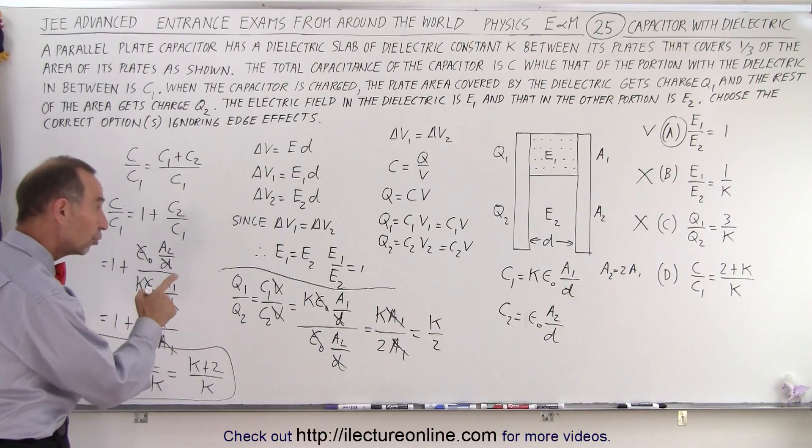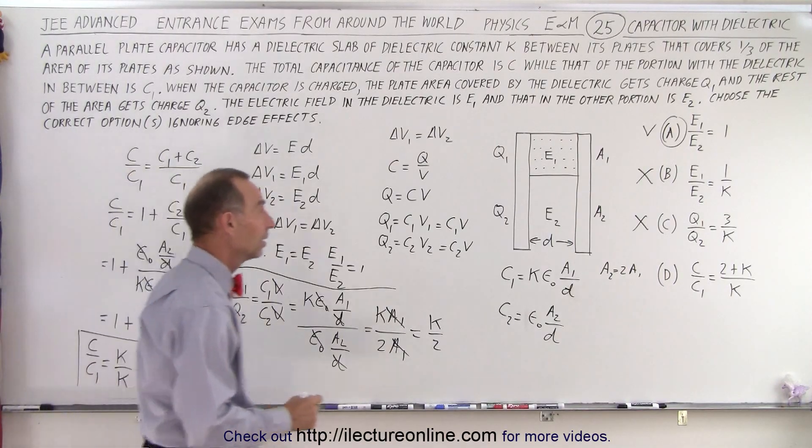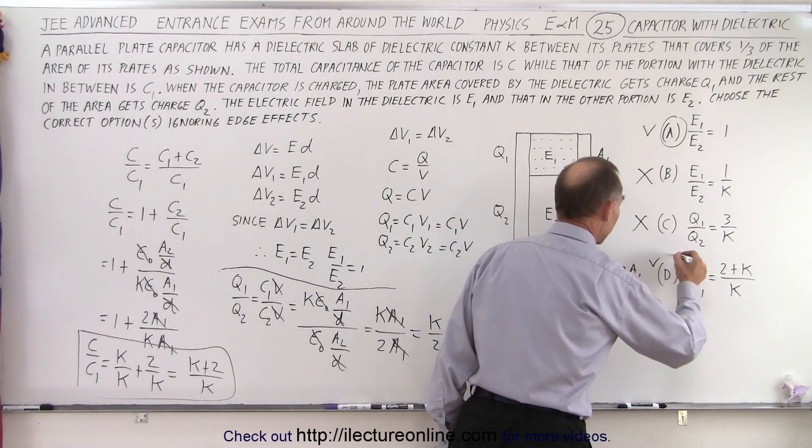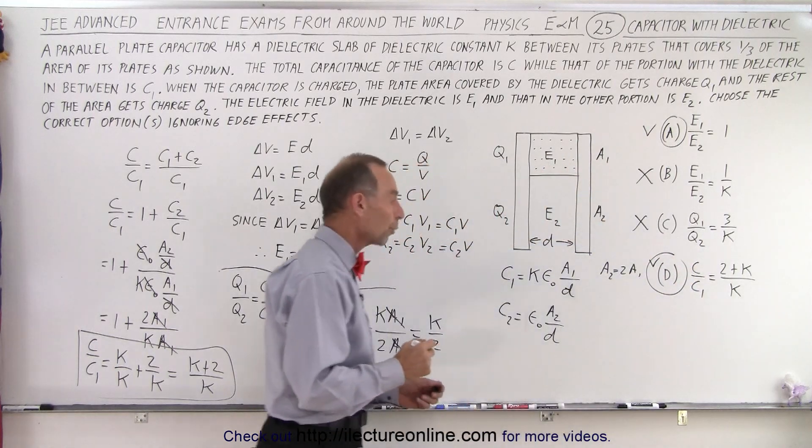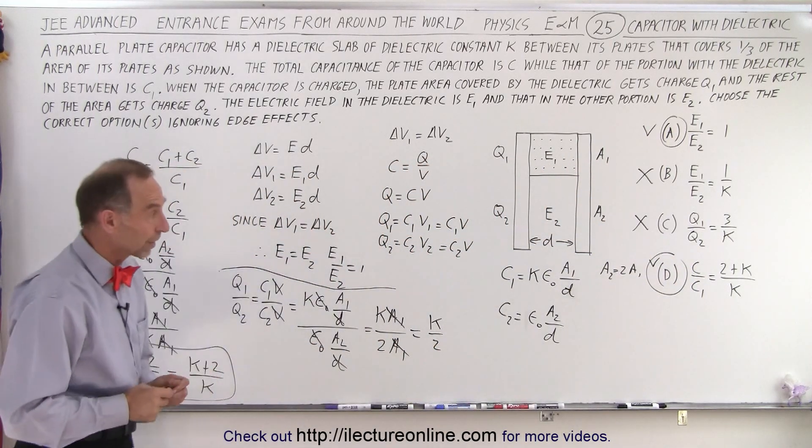C over C1 is indeed 2 plus K over K, same thing, so we know that D is correct, and there are two correct answers in this particular problem.